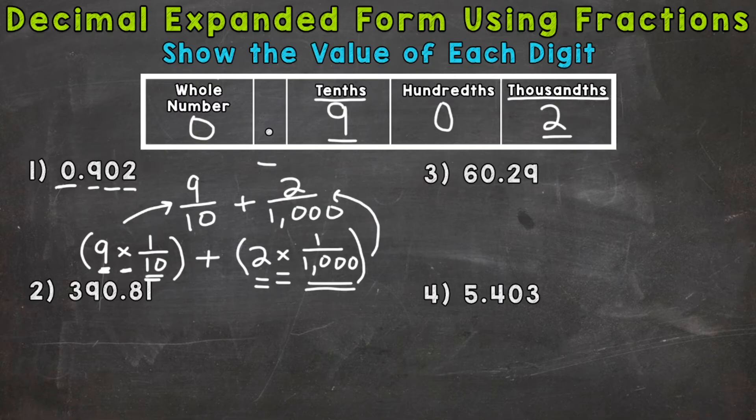All right, on to number two, where we have 390 and 81 hundredths. So here we have a whole number. So let's start with the three, which has a value of 300, plus a nine with a value of 90, plus we can leave that zero out that's in the ones place. So we move to the tenths, and we have eight tenths. So eight over ten to represent eight tenths, plus a one in the hundredths. So one hundredth.